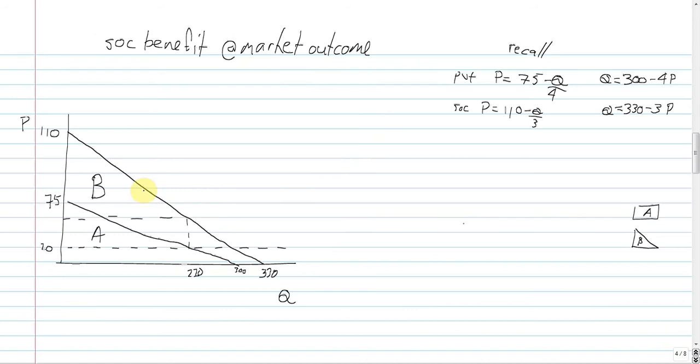And you can see I've subdivided the area of the benefit into triangle B and rectangle A. So we're going to calculate those two amounts and get a total benefit. What we need to know to calculate that is this intercept right here, which means we need to know this point right here.